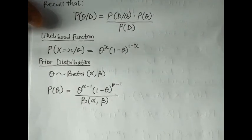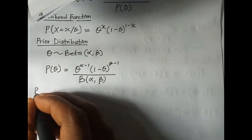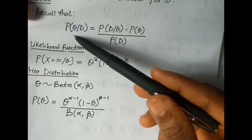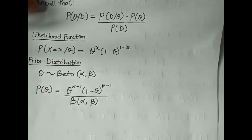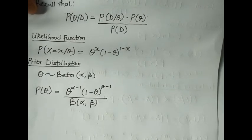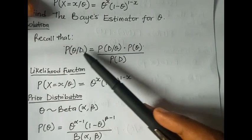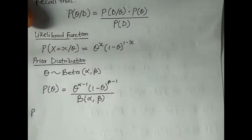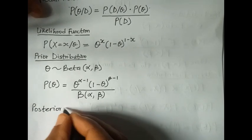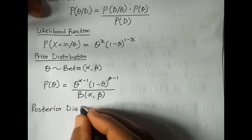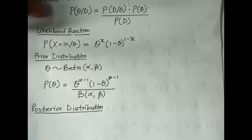We will now go over to the posterior distribution. The posterior distribution combines the likelihood function and the prior distribution — that means it combines the likelihood and the prior. The posterior distribution is proportional to both of these.